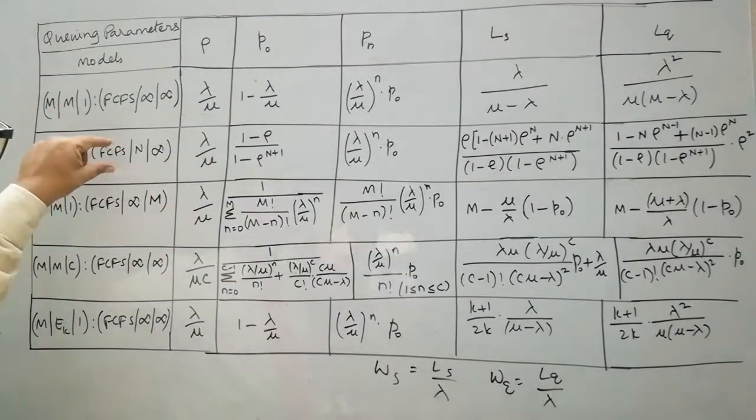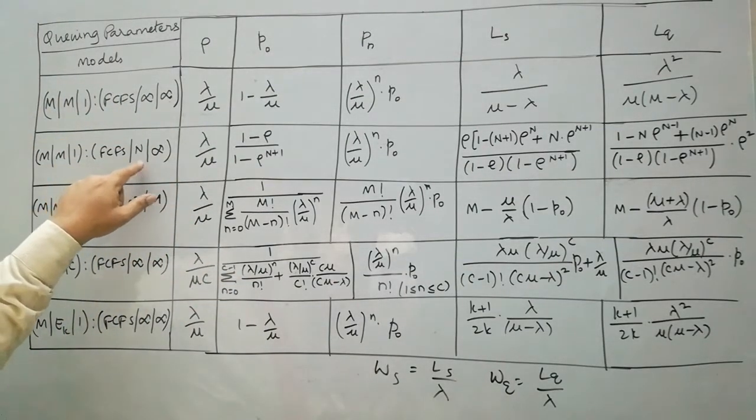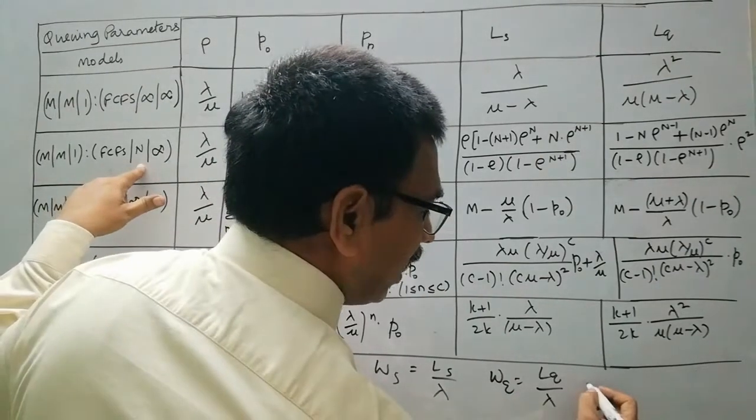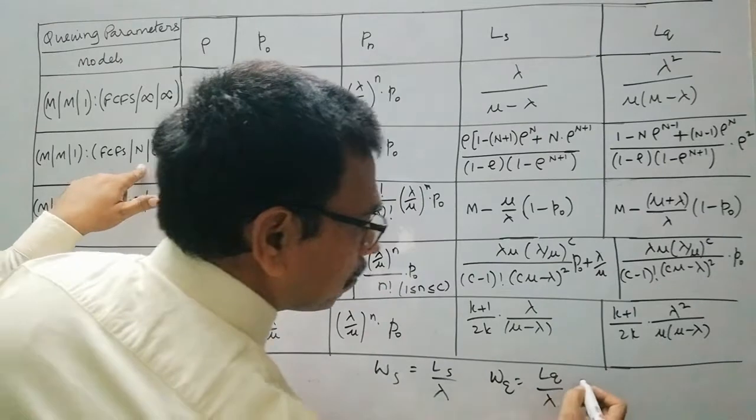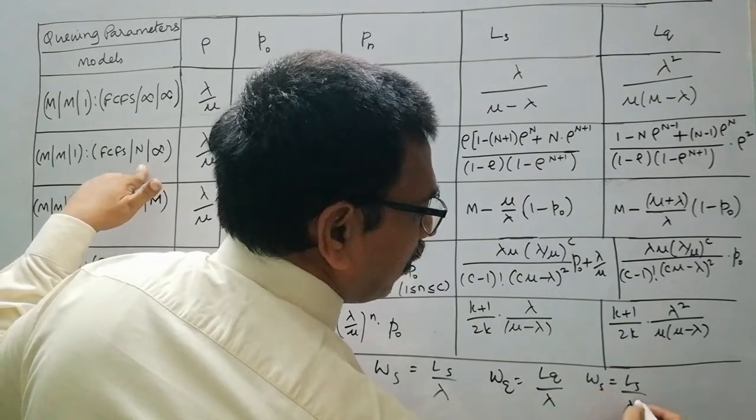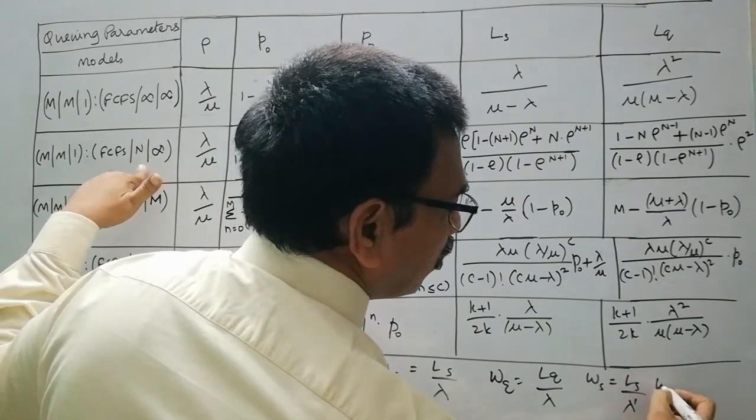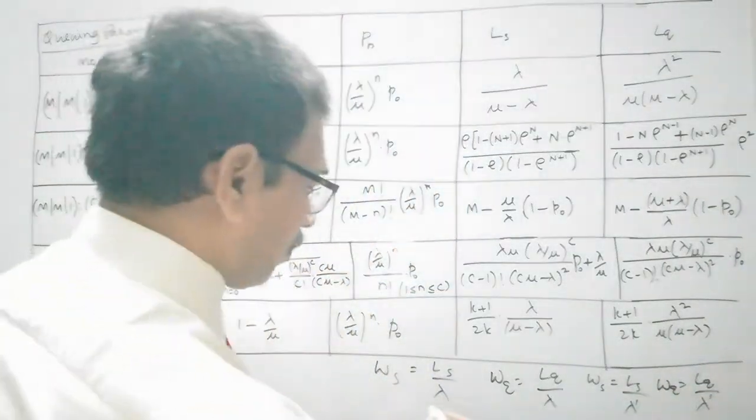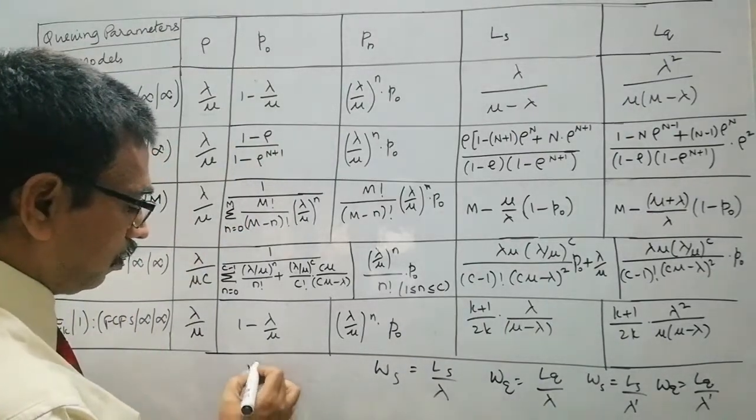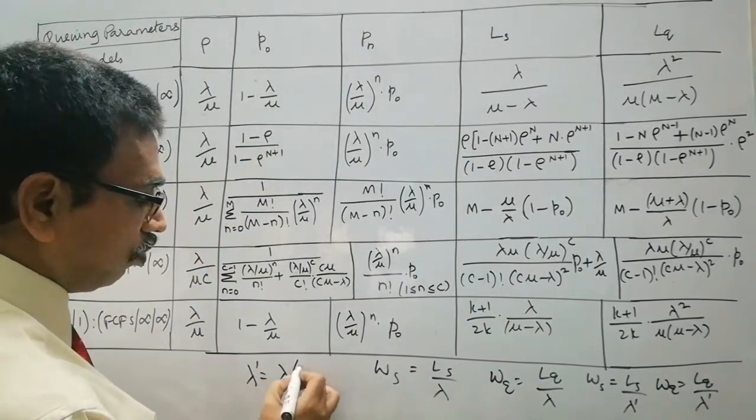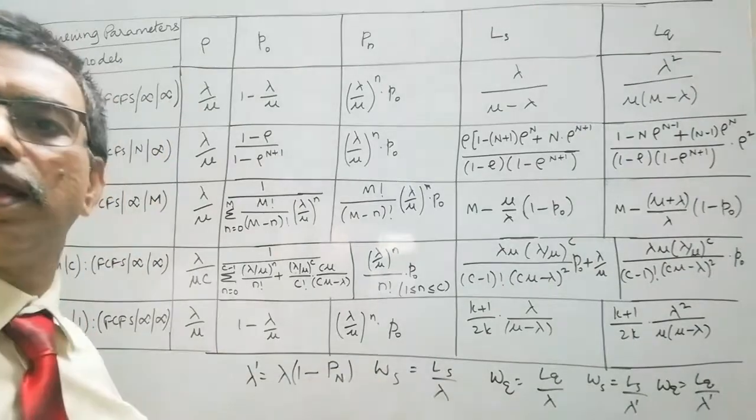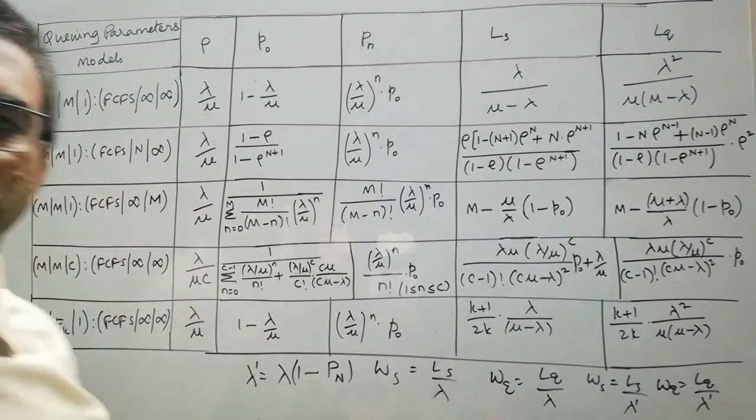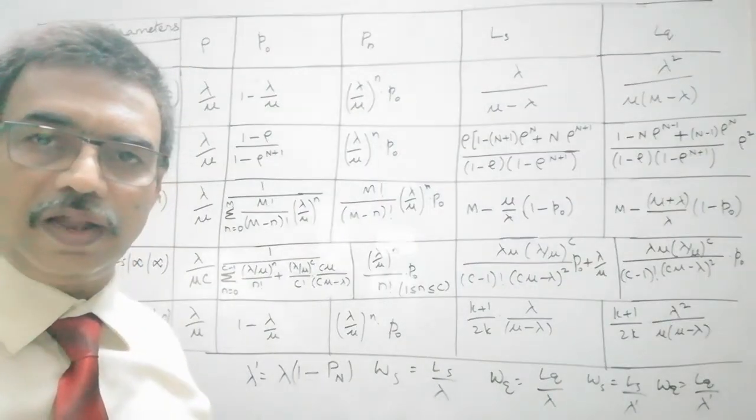And particular, for this particular model, that is limited capacity model, it is Ls/λ', Ws equal to Ls/λ', and Wq equal to Lq/λ'. And this λ' is equal to λ × (1 - Pₙ), where capital N is the capacity of the server.